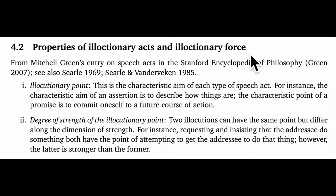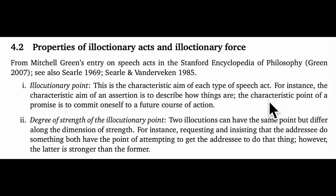Equally important will be the properties of illocutionary acts and illocutionary force, drawn from Mitchell Green's entry in the Stanford Encyclopedia of Philosophy. First, the illocutionary point: this is the characteristic aim of each type of speech act. For instance, the characteristic aim of an assertion is to describe how things are; the characteristic point of a promise is to commit oneself to a future course of action; and the characteristic aim of a threat might be to make someone feel afraid. Second, the degree of strength of the illocutionary point: two illocutions can have the same point but differ in strength — requesting and insisting both aim to get the addressee to do something, but the latter is stronger than the former.